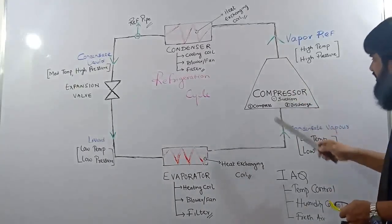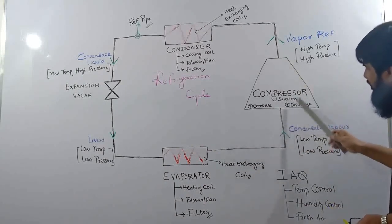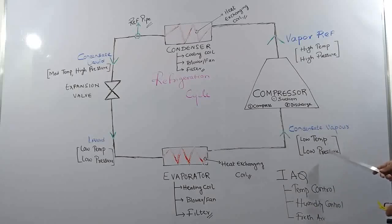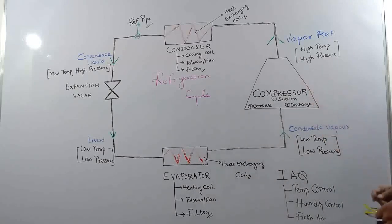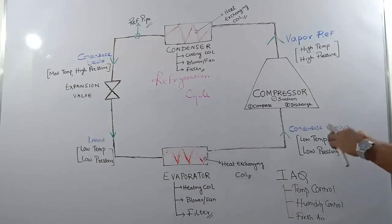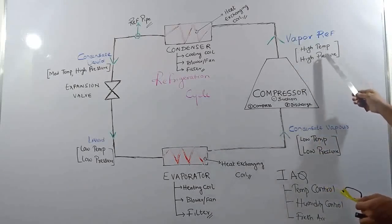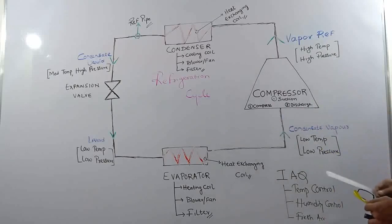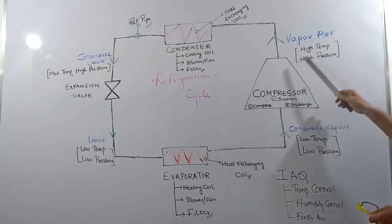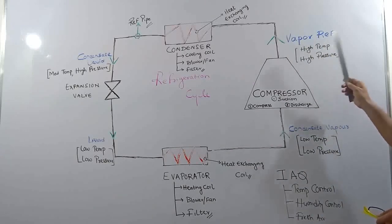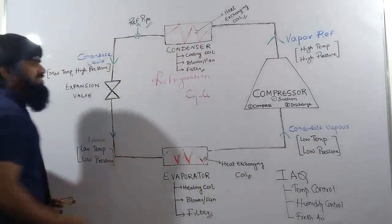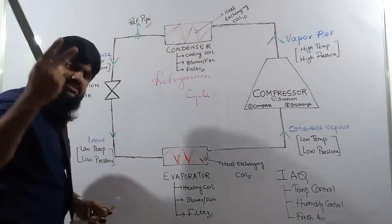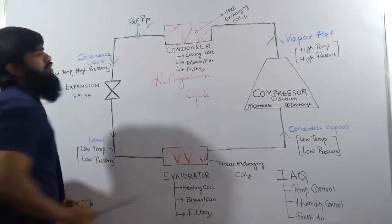At the inlet of the compressor, we get superheated vapor at low temperature and low pressure. This vapor is compressed by the compressor. As the gas is compressed, its temperature and pressure both increase. At the output of the compressor, we get a high temperature, high pressure vapor refrigerant. This is then given to a set of cooling coils which we call the condenser. The condenser can be air-cooled or water-cooled.